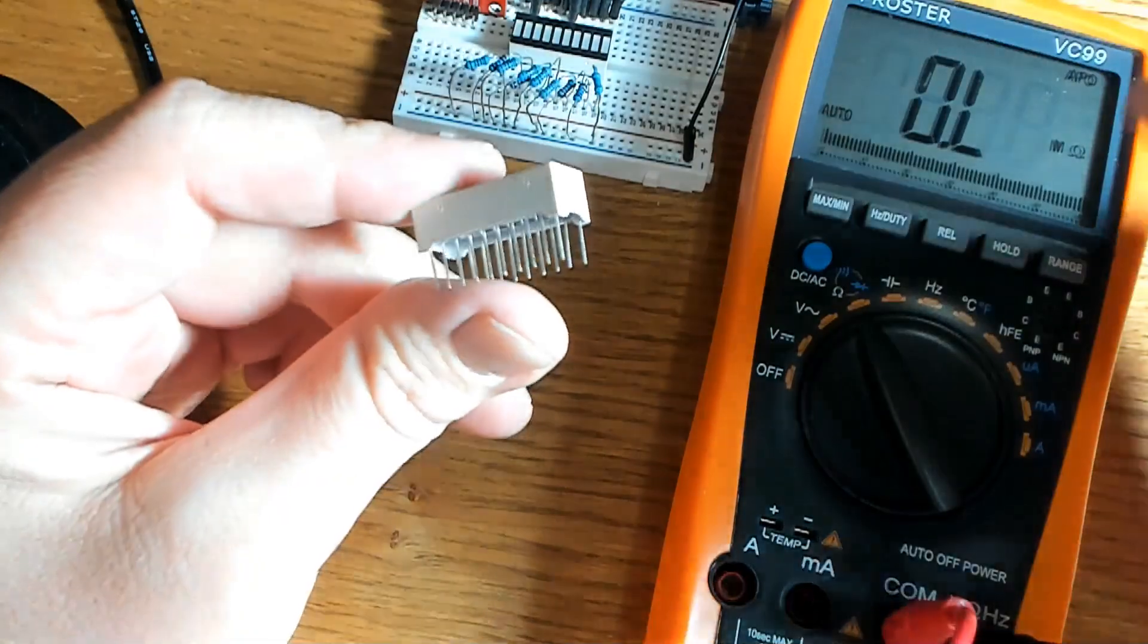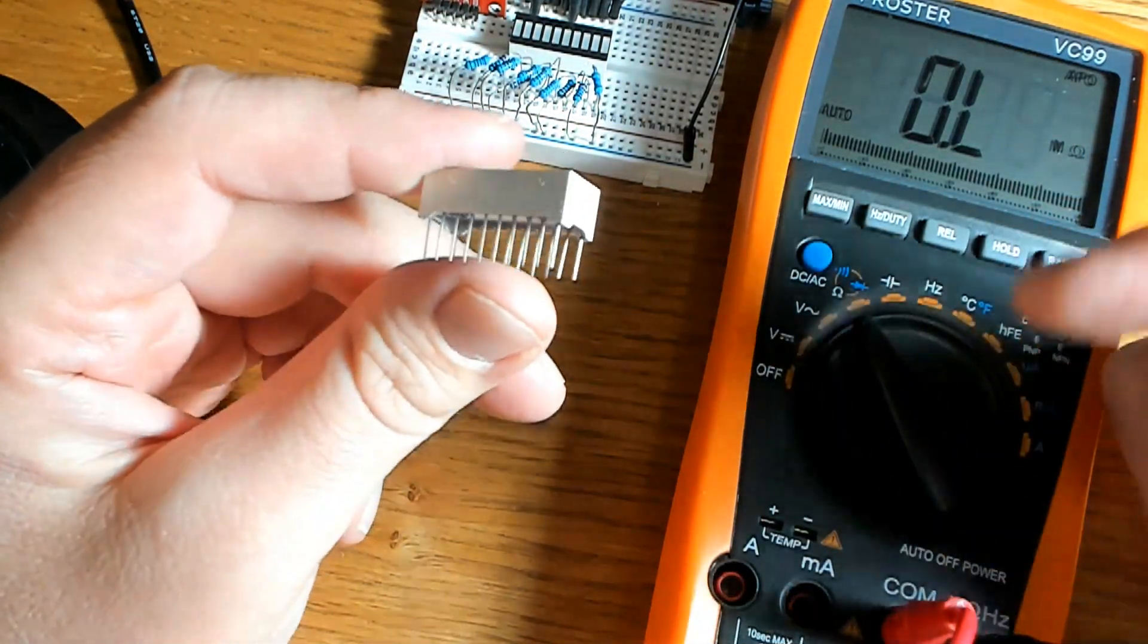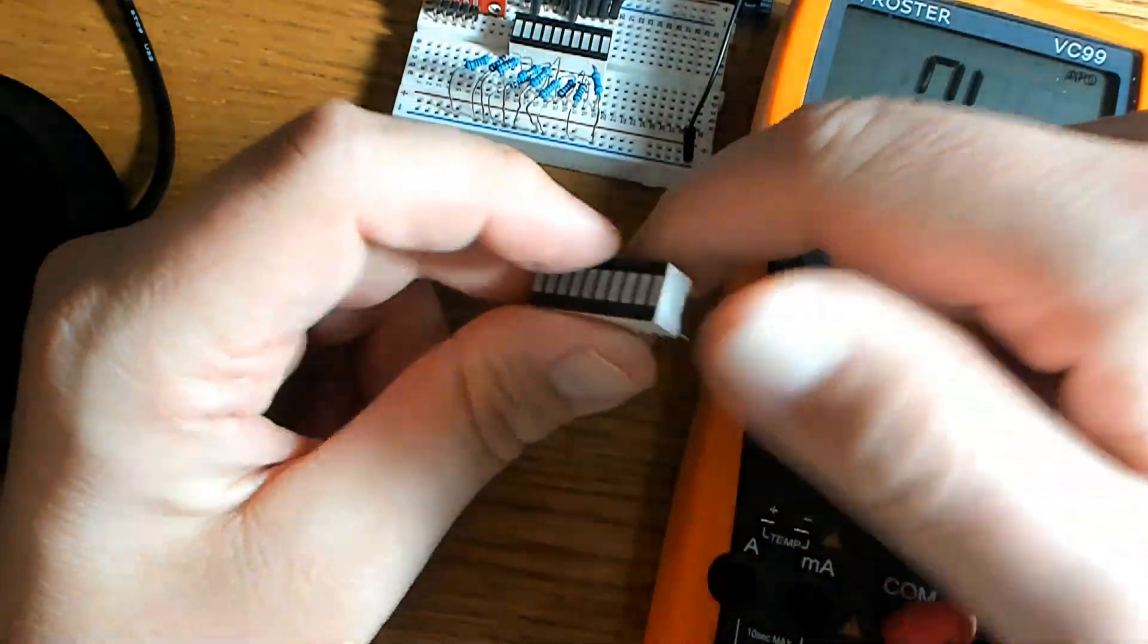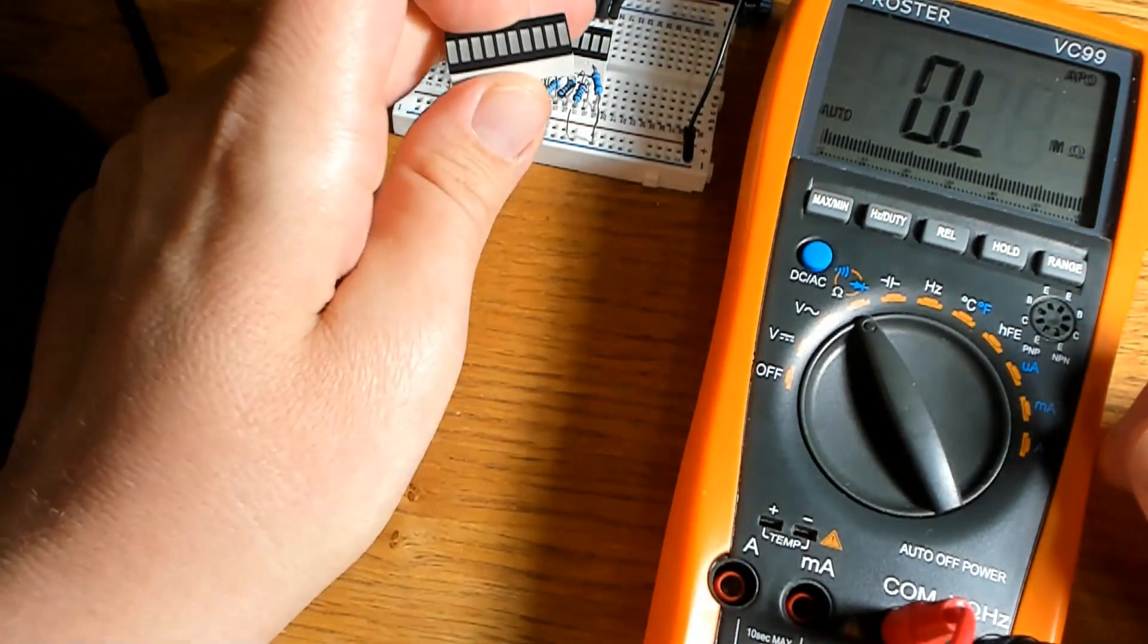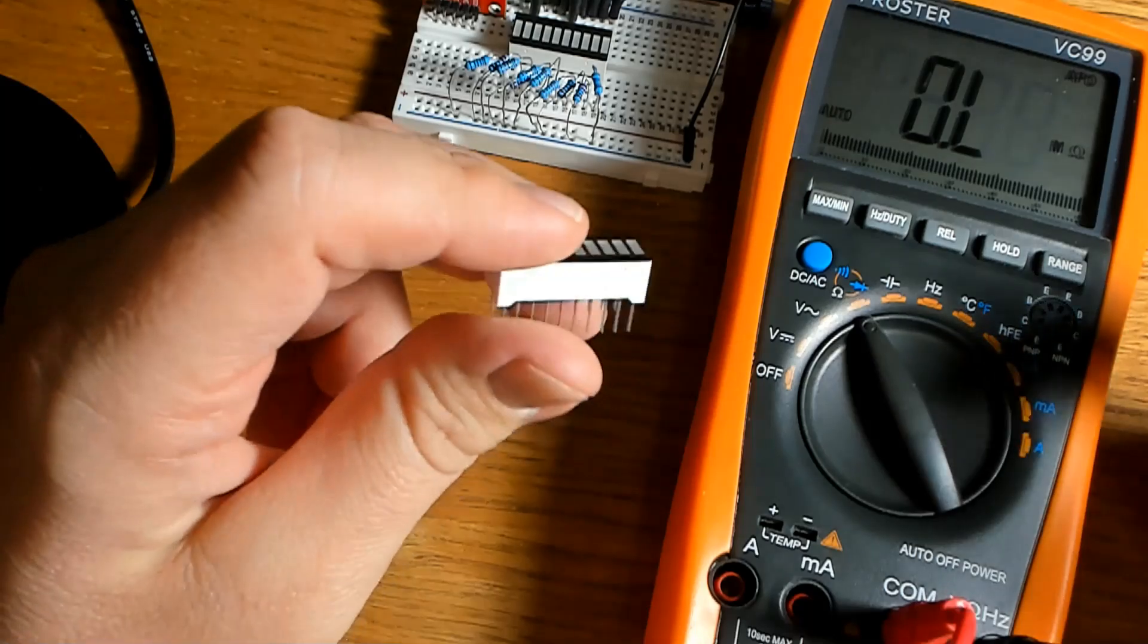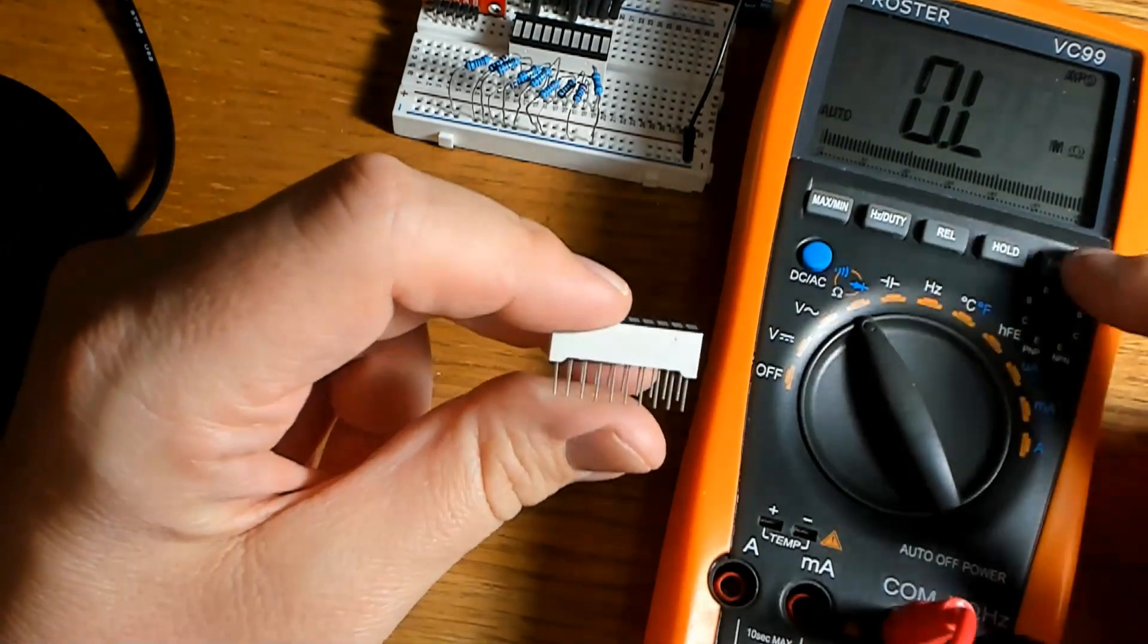Since we need to connect the positive anode side to the Arduino pins, we need to know which side is anode and which is cathode. And there's a couple ways you can do this. You can either put it in your circuit and if it doesn't work turn it around or you can check using a multimeter.